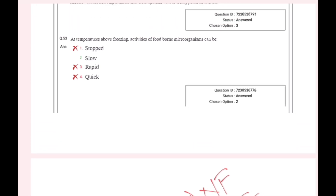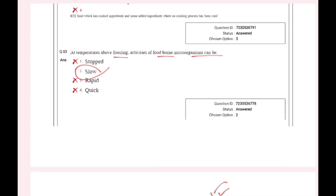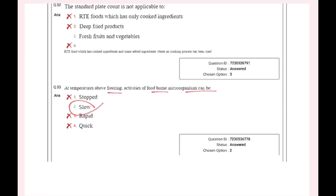At temperatures above freezing, activities of foodborne microorganisms can be slowed. Freezing and above-freezing temperatures — these microorganisms can be used as indicators.